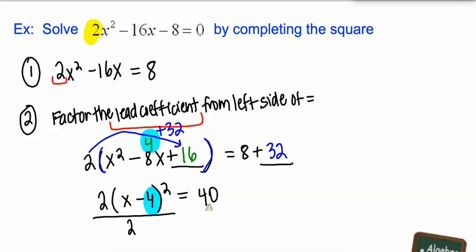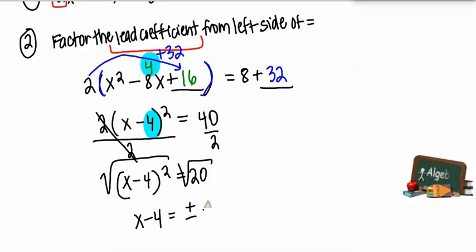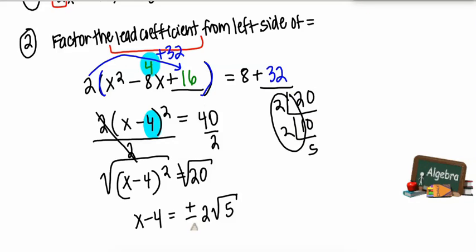Now I can divide both sides by 2. And we get x minus 4 quantity squared equals 20. I square root both sides. x minus 4 equals plus or minus 2 times the square root of 5. So the square root of 20 is 2 times the square root of 5. Add 4 to both sides, and we get x equals 4 plus or minus 2 times the square root of 5.